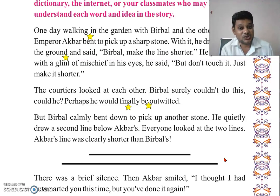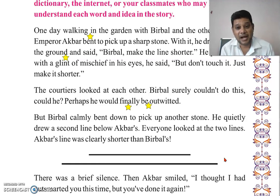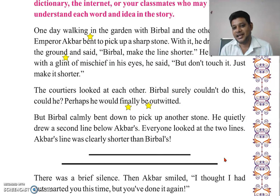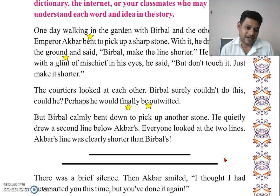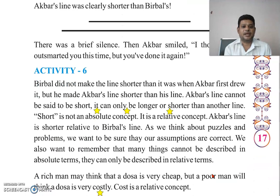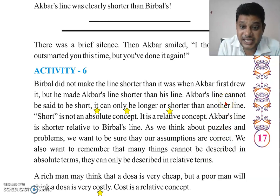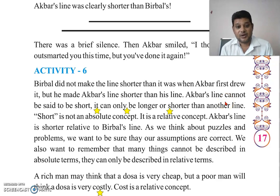Akbar said: 'I thought मैंने सोचा था कि I had outsmarted you this time — कि मैं इस बार अपनी चतुराई से तुझे हरा दूँगा — but you have done it again.' You outsmarted me this time also. Now in Activity 6: people did not make the line shorter than it was — but he made Akbar's line shorter than his own line.